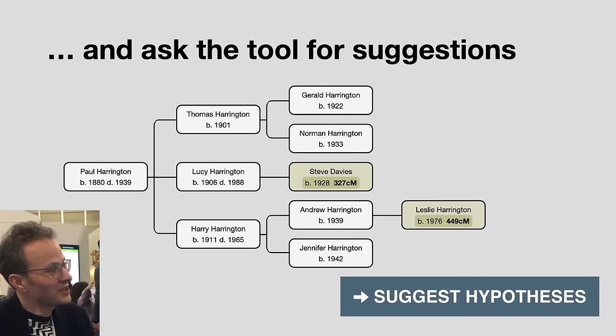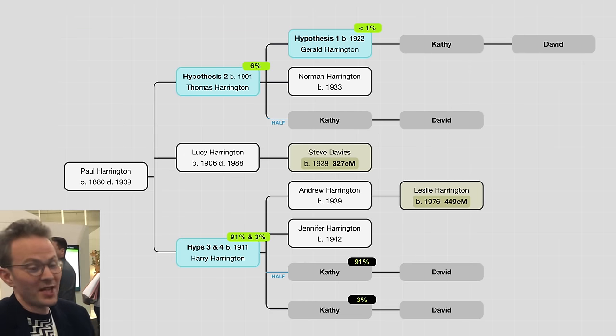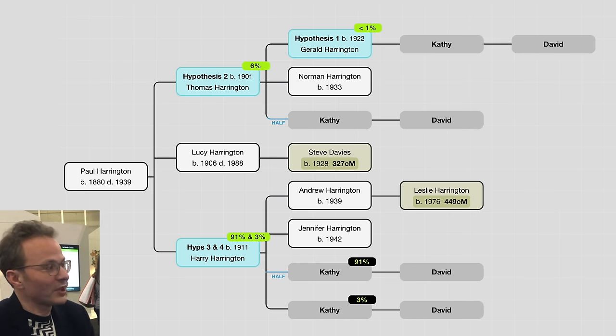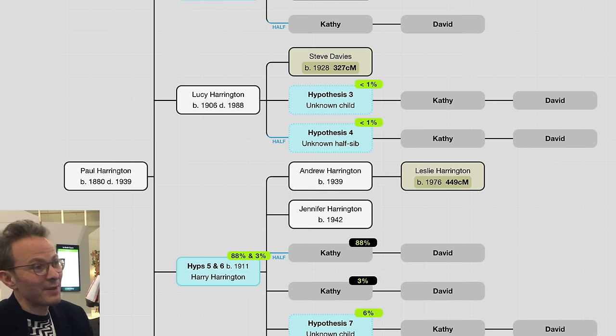Then we have the magical 'Suggest Hypotheses' button. This button works much better in the new version because you've given it all this information, and it can suggest quite sensible hypotheses. When you click it, it tries out all the people in the tree as a potential father. If it finds someone female, it skips them. If someone was born too early or too late, it won't use them. It will also add new people by default — for example, if an unknown child was a half-sibling, that person's parent could have been the father.